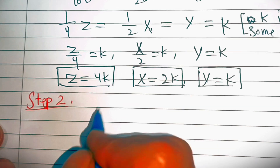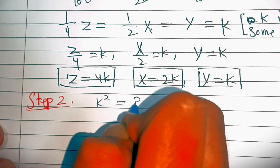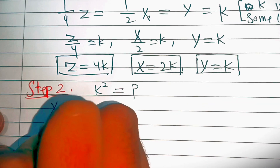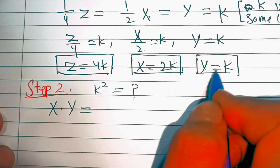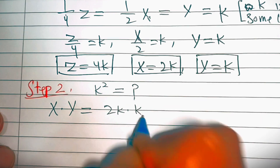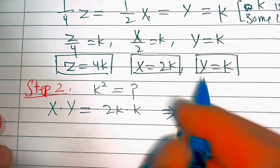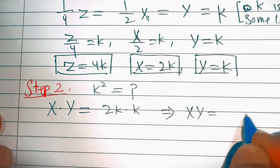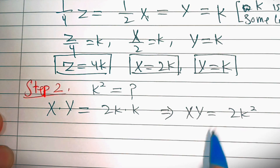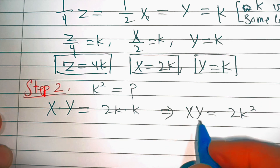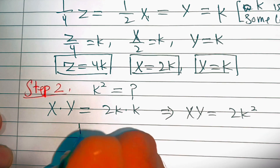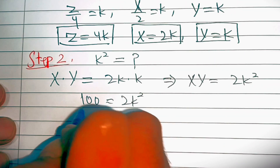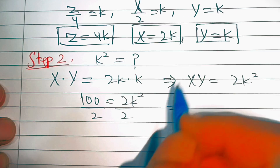Now in the second step, we will find the value of k squared. For that we will multiply x and y. We have x times y, where x is 2k and y is k. So that implies xy equals 2k squared. And since xy equals 100, that means 2k squared equals 100, so k squared equals 50.